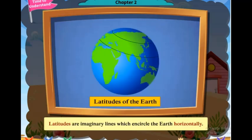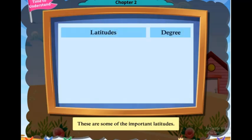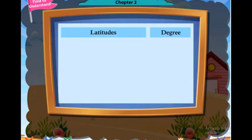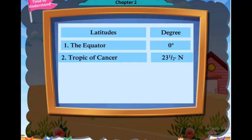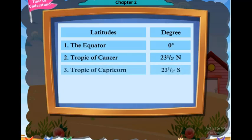Latitudes are imaginary lines which encircle the earth horizontally. These are some of the important latitudes: 1. The equator — 0 degrees. 2. Tropic of Cancer — 23.5 degrees north. 3. Tropic of Capricorn — 23.5 degrees south.